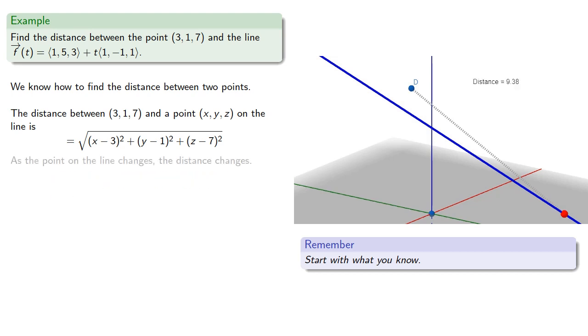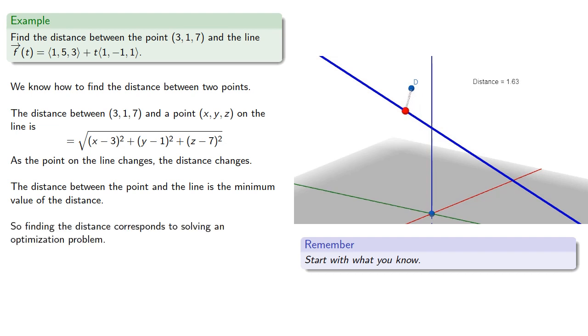Now as the point on the line changes, the distance changes. And what we're calling the distance between the point and the line is the minimum value of the distance. So finding the distance corresponds to solving an optimization problem.